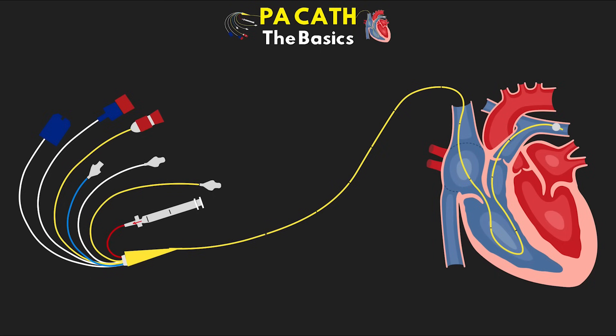Our patients can have lines for all sorts of different reasons. Of the many lines that they can have, one is probably the most intimidating as well as the least understood by those who don't work with them very often, and that is the pulmonary artery catheter. So let's start to break down this catheter and help it make more sense, starting with this lesson.